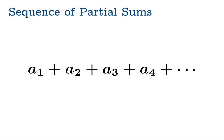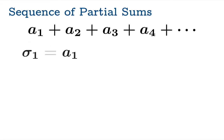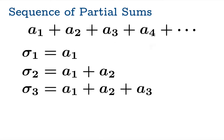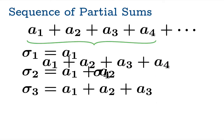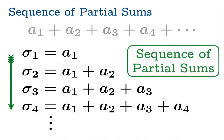Just like secant slopes were the key definition whose limiting values give tangent slopes, and just like Riemann sums were the fundamental thing we take the limiting value of to get integrals — the sequence of partial sums is the fundamental tool we'll use as a bridge to get to convergence of a series. So let's define very carefully what we mean by a sequence of partial sums. You take your series and build a new sequence in a very straightforward way.